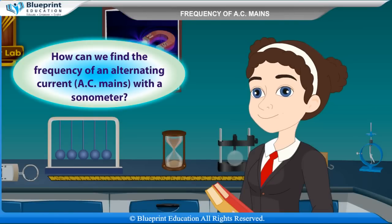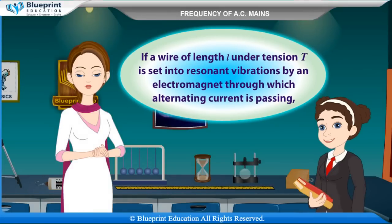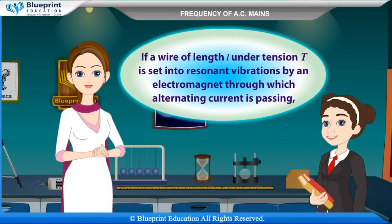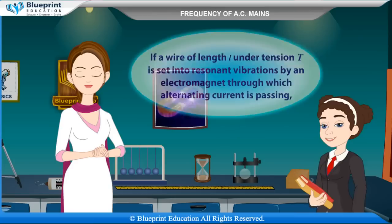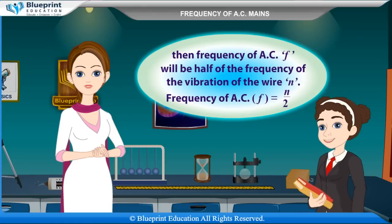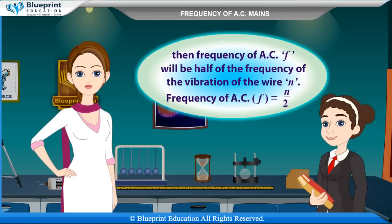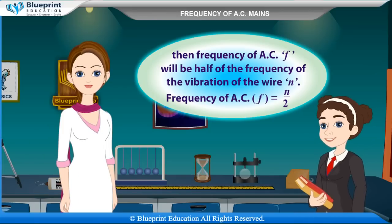Madam, how can we find the frequency of an alternating current AC mains with a sonometer? If a wire of length L under tension T is set into resonant vibrations by an electromagnet through which alternating current is passing, then the frequency of AC, F, will be half of the frequency of the vibration of the wire N. So F = N/2.